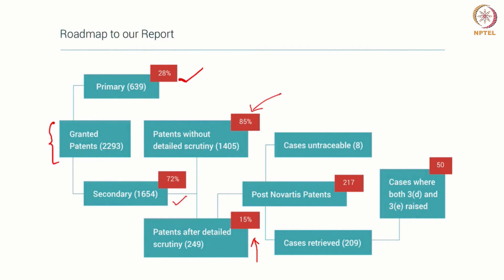Looking at post-Novartis patents, there were 217 patents, and we were able to retrieve 209 of those. Of the 209, 50 were cases where Section 3D and Section 3E objections were raised initially but the applicants got over them. Of those 50, we found that all of them did not follow the standard laid down by the Supreme Court — the Novartis standard was not followed, and at least one of those seven steps was not followed in granting these patents.